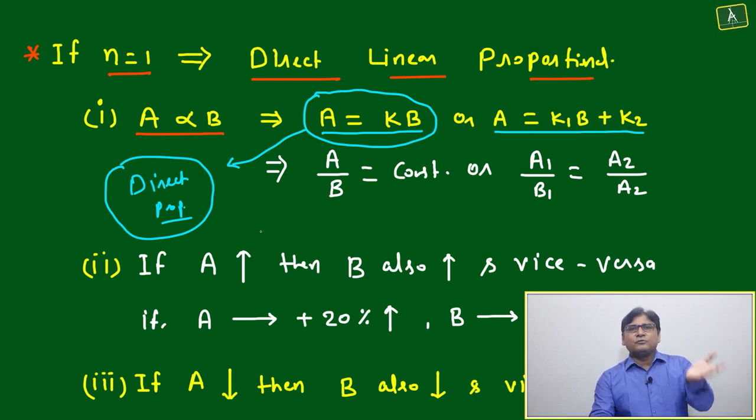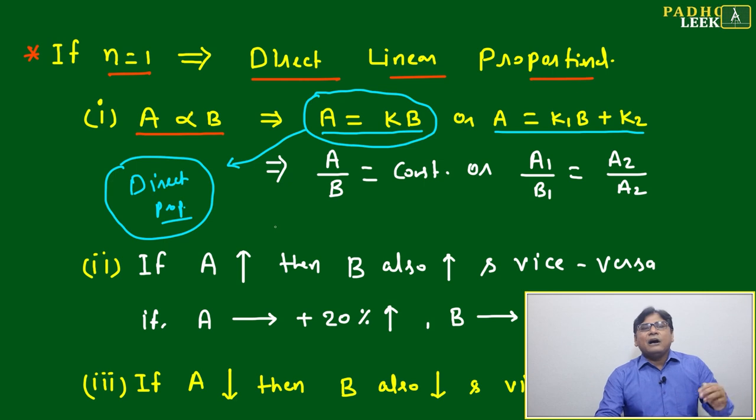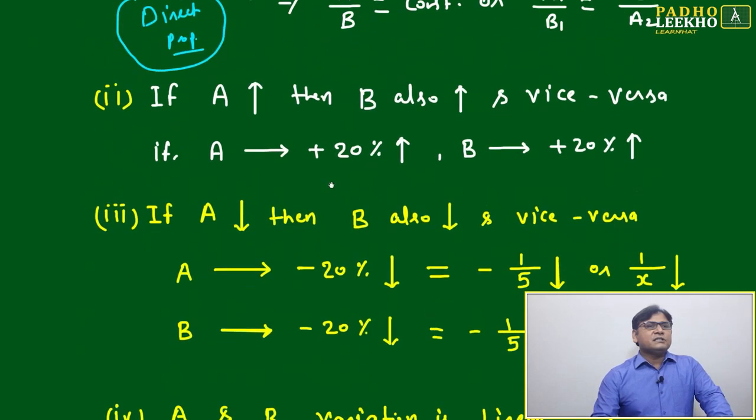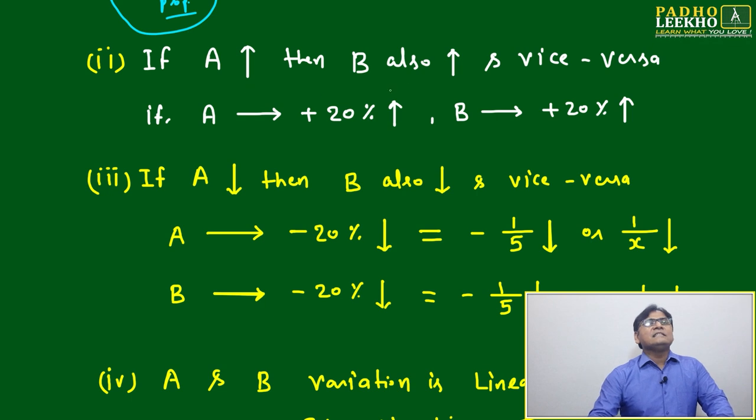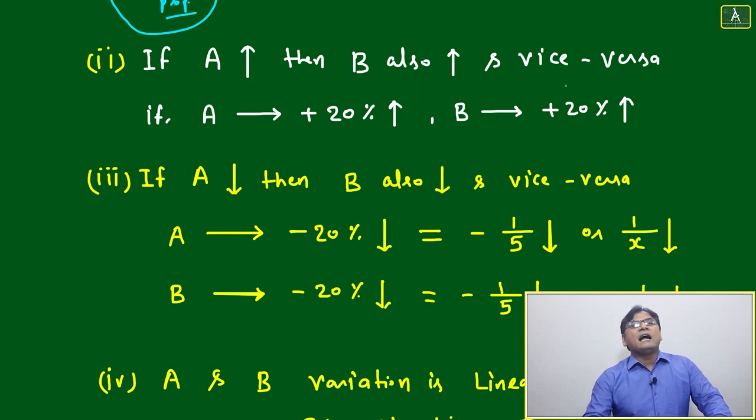Now we will try to explore this idea: A equal to k into B. If A is increasing, then B also will increase, and vice versa. If A is decreasing, B also will decrease.